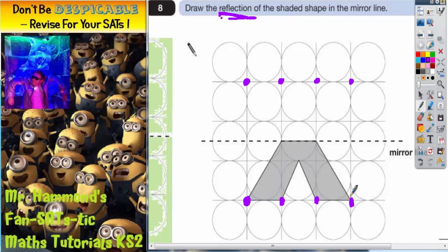The only corner we haven't done is this one here, which I'll use a different color just to make it less confusing. This one here, that's just half a square to the mirror, so half a square on the other side.